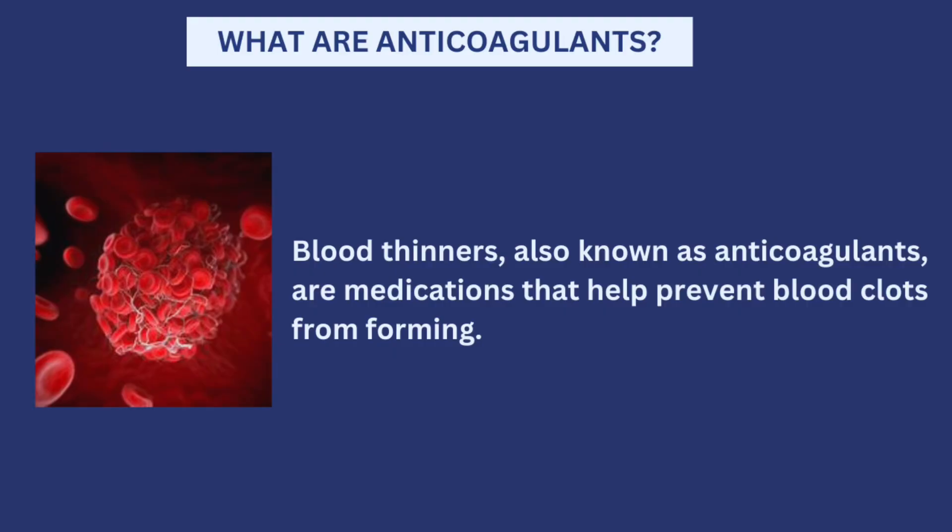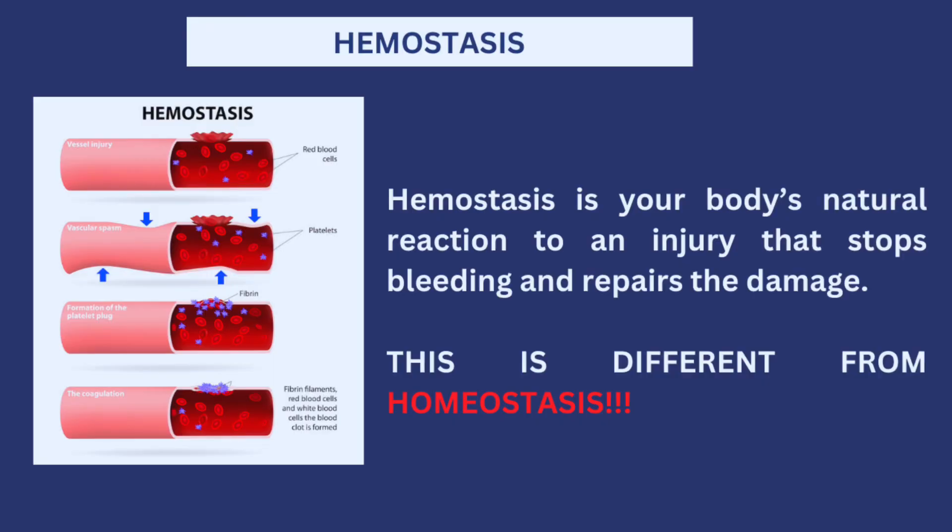Anticoagulants basically prevent blood clots from forming. They are also called blood thinners, but that doesn't mean they make your blood thin — they just slow down the blood clotting process. That blood clotting process is known as hemostasis, which is how the body reacts when there is a cut or a break in any blood-carrying vessel.